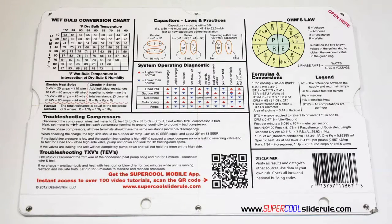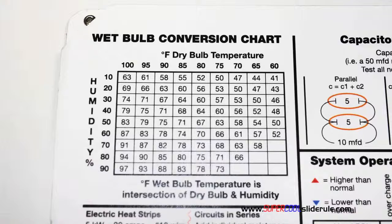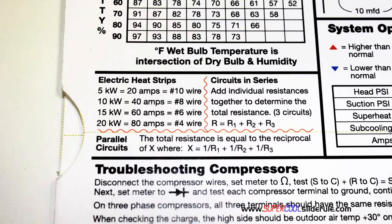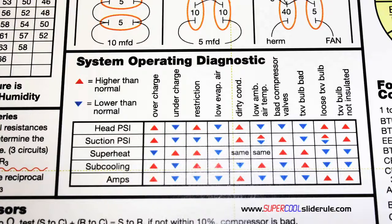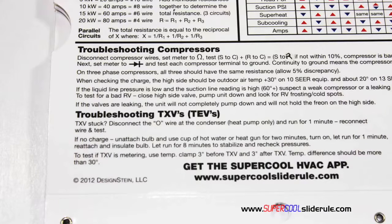It has capacitor rules and practices, a wet bulb conversion chart, how to perform computations on series or parallel circuits, an electric heat strip guide, a complete system troubleshooting diagnostic chart, and how to troubleshoot compressors and TXV.